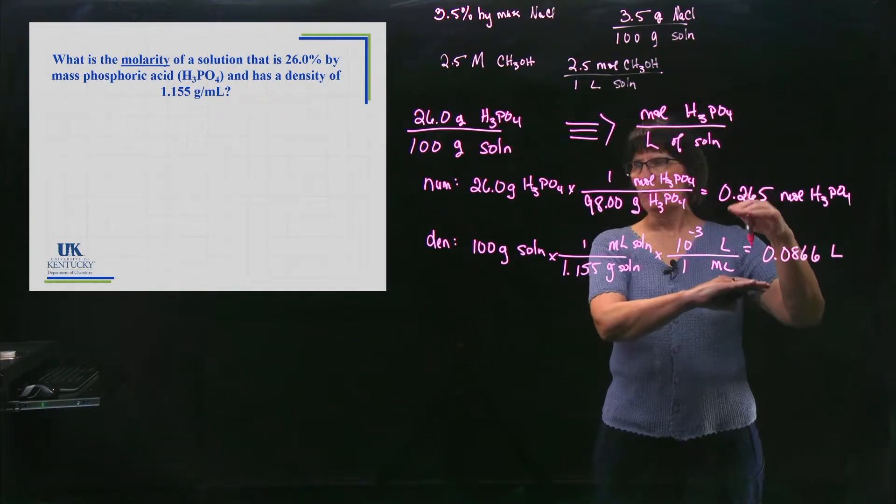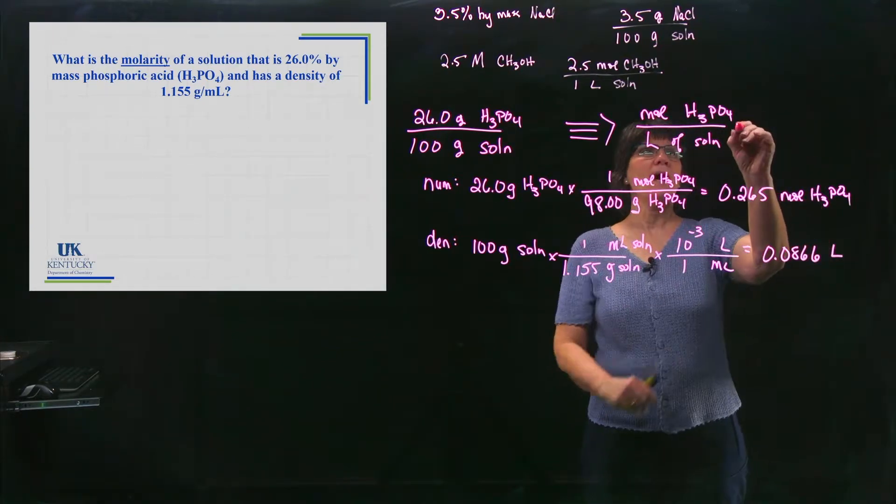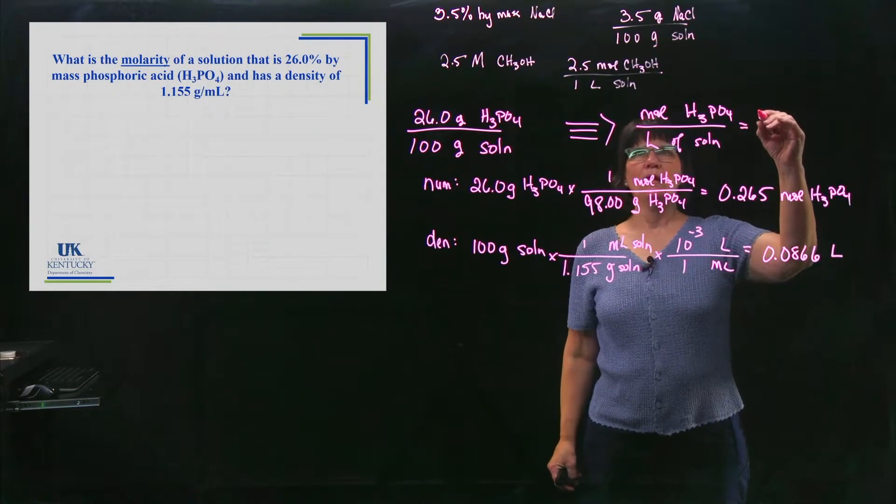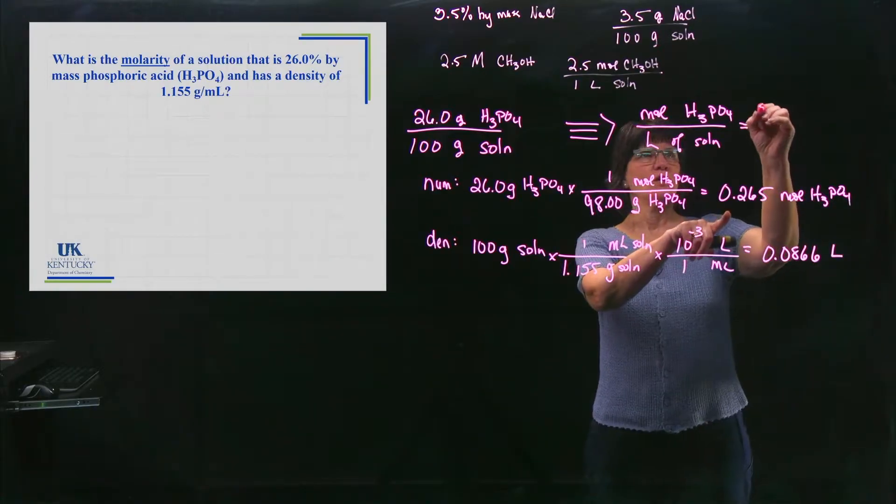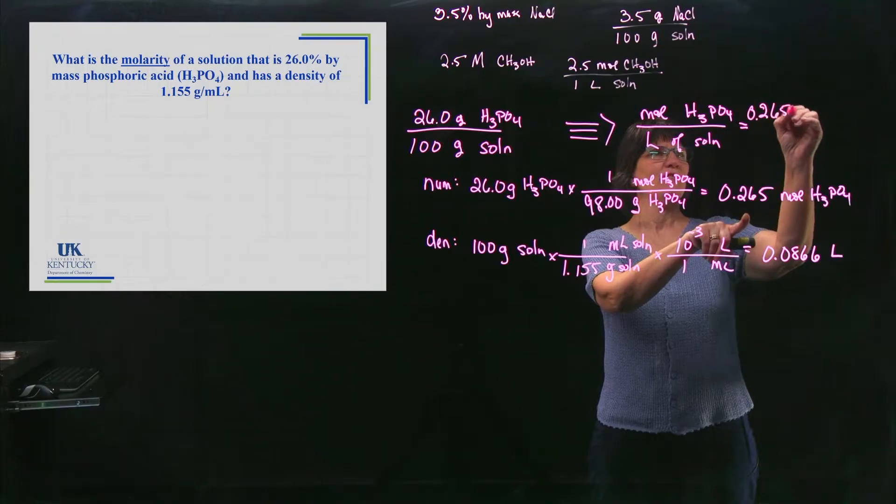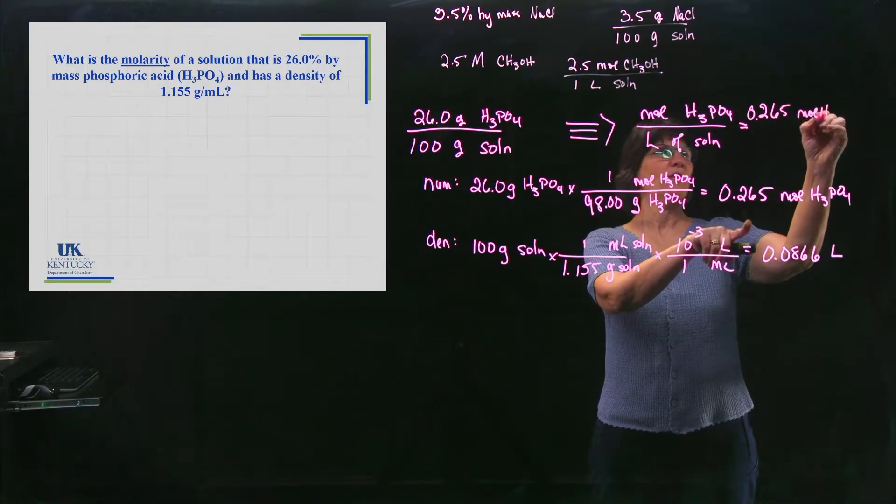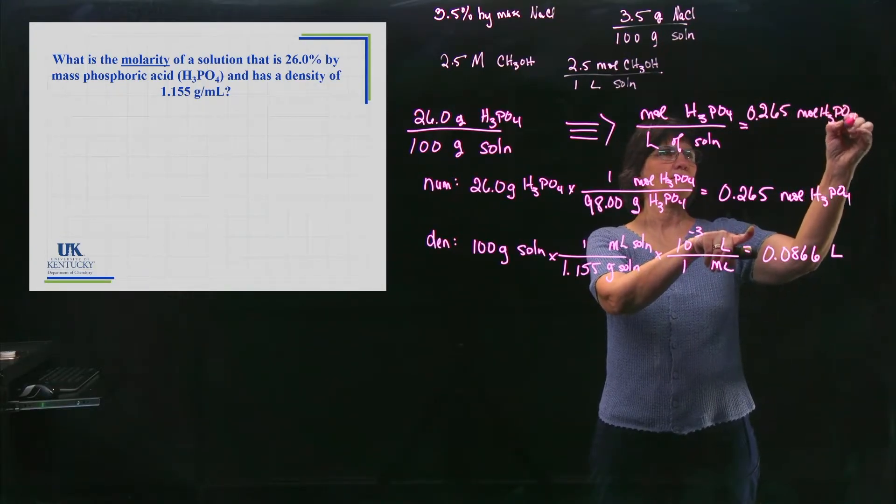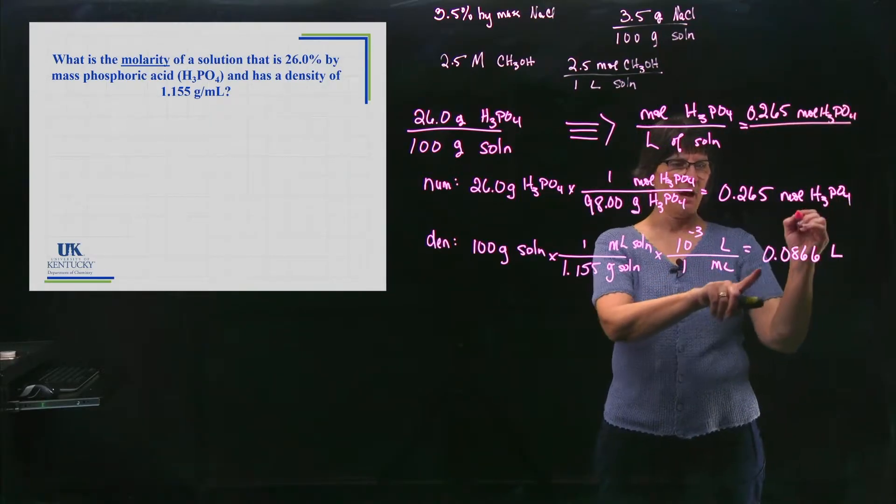Now I'm ready. I've worked my numerator. I've worked my denominator. I'm ready to recombine them to get the molality. So it's 0.265 moles of phosphoric acid per, the denominator is 0.0866 liters of solution.